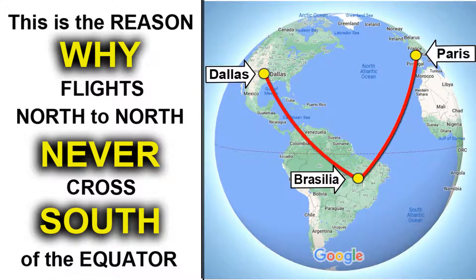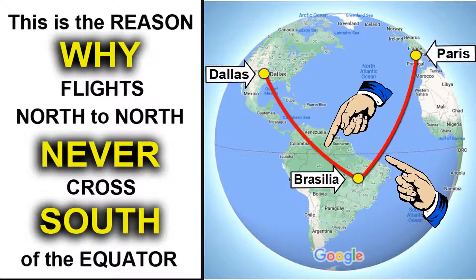This is the reason why flights north to north never cross south of the equator. You will never see a flight, for example, from the US to Europe — from Dallas to Paris — crossing south of the equator, stopping with a layover south of the equator, and then flying back north. You will never see a flight from Dallas going to anywhere in Europe with a stopover south of the equator.